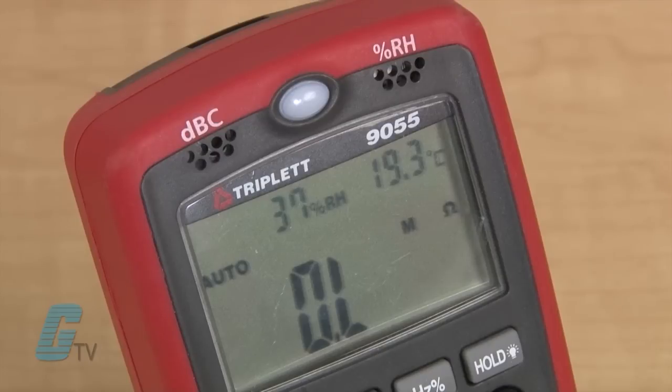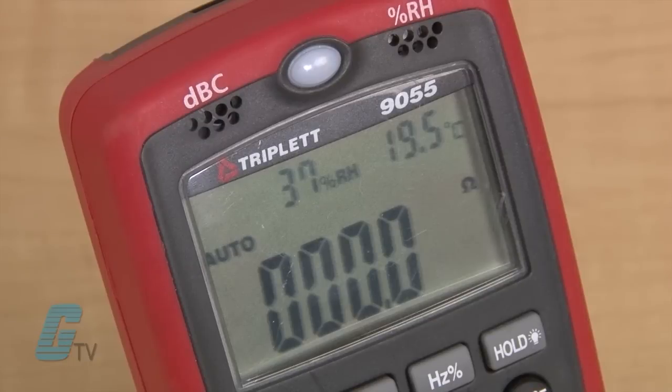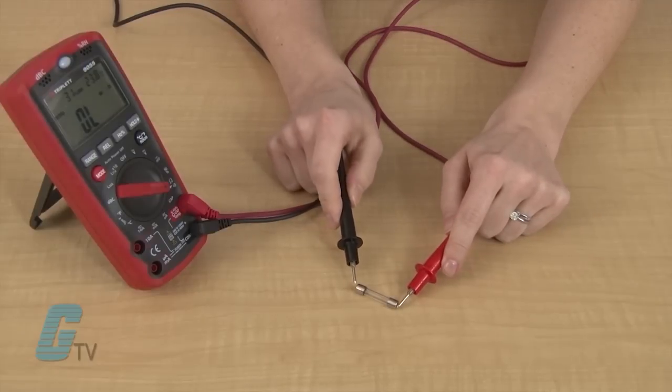I can also use the resistance measurement setting represented by the omega or ohm sign. When in this setting, I should get something other than OL when touching the two leads together. In this case, I have zeros displayed on the screen. Touching both ends to the fuse should reproduce the same results.